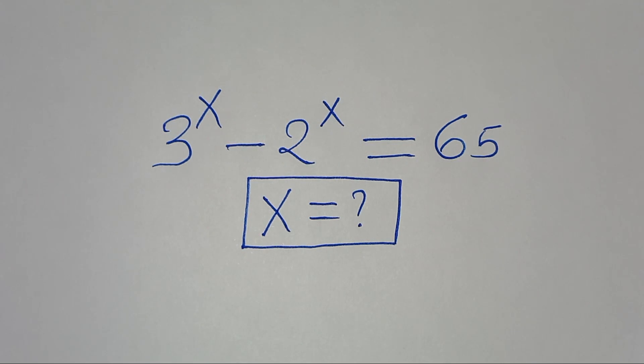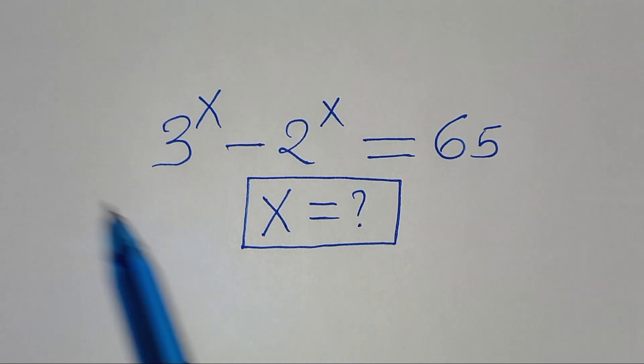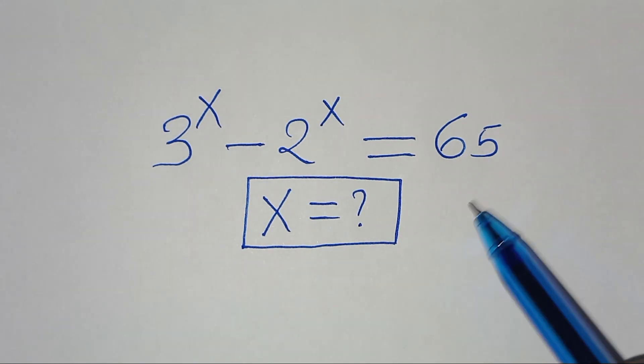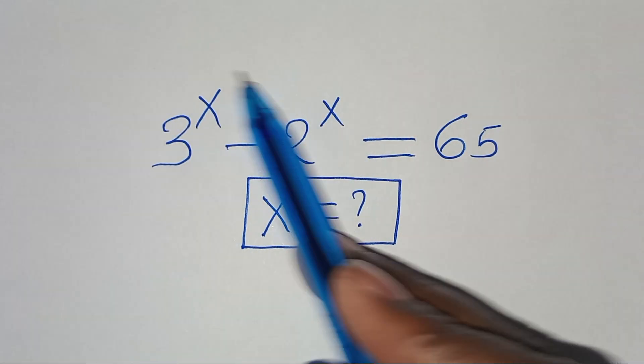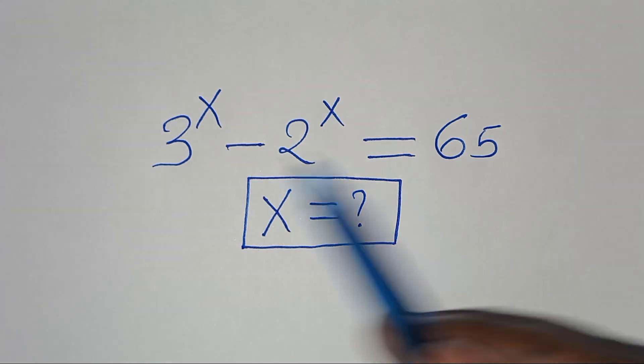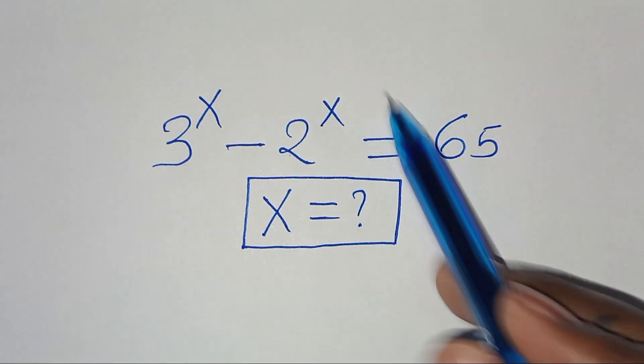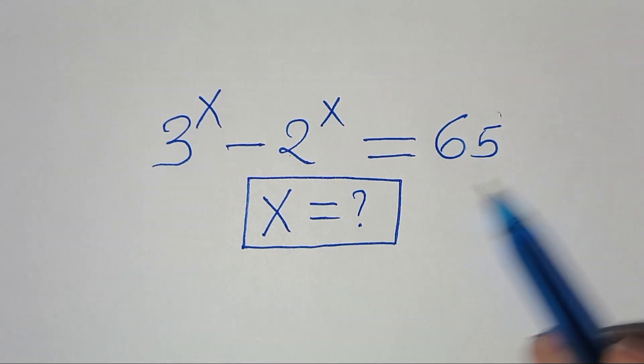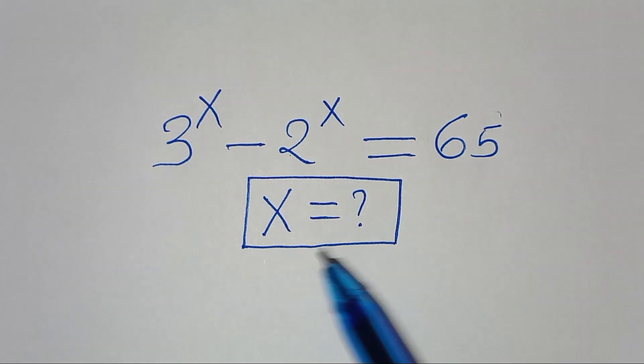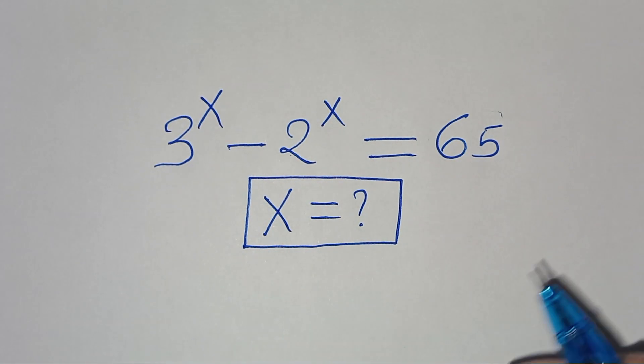Hello everyone, you are welcome to solve this nice algebra problem, which is 3 to the power of x minus 2 to the power of x, this is equal to 65. So, what is the value of x?